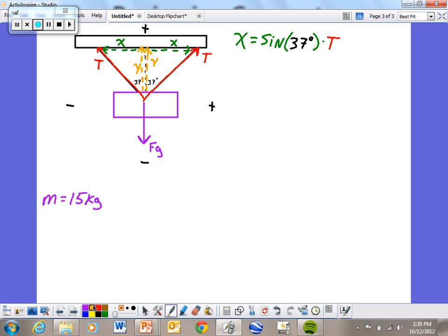And the Y is the adjacent side, so that's going to be found by taking the cosine of our angle, 37 degrees, and multiplying by our hypotenuse, which is tension.